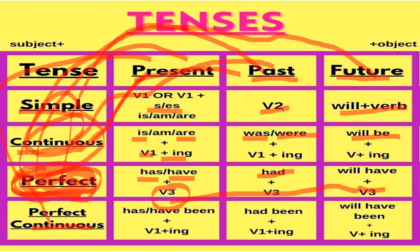In present perfect continuous tense, remember: continuous means ing form of the verb. In perfect we use 'has' and 'have,' so here also we use 'has' and 'have.' But 'been' is added in present, past, and future perfect continuous. Only the auxiliary verb changes — has/have, had, will have — and we add 'been' plus the ing form. For example: 'He has been working since morning,' 'We have been doing this.' For past perfect continuous: 'had been' plus ing. For future perfect continuous: 'will have been' plus ing.